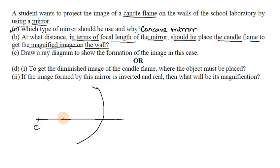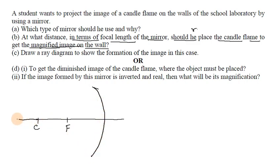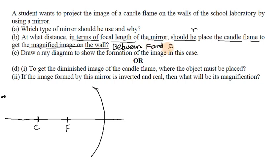To get a magnified image on the wall, consider the positions relative to the mirror: object at infinity gives a highly diminished point-sized image; beyond C gives a diminished image; at C gives a same-size image; between f and C gives an enlarged image. So the answer is: place the object between f and C, i.e., between the focus and the center of curvature.